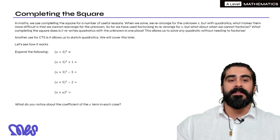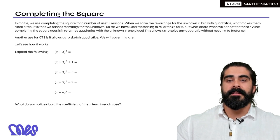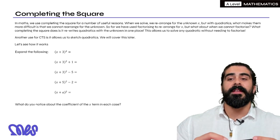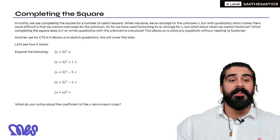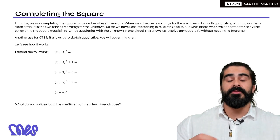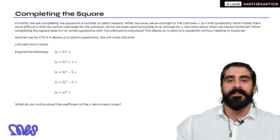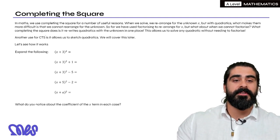What completing the square does is it rewrites quadratics with the unknown in one place. This allows us to solve any quadratic without needing to factorize. Another use for completing the square, which is what is relevant for A-level maths, is it allows us to sketch quadratics and we'll cover this in the next video. Now let's just see how it works.